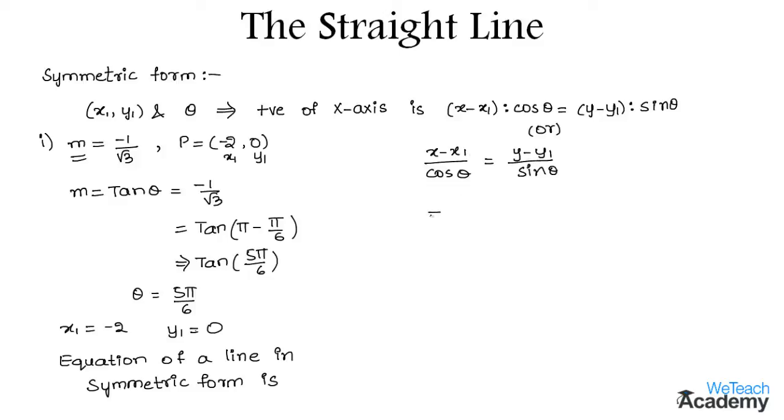So here let us use this formula. We get x minus the value of x1 which is minus 2, divided by cos theta, that is cos 5 pi by 6, equals y minus y1 which is 0, divided by sin 5 pi by 6.